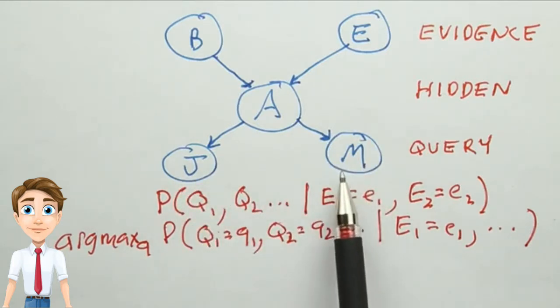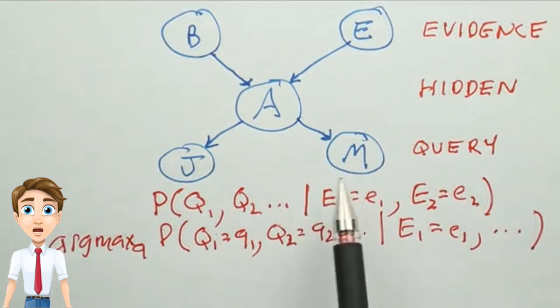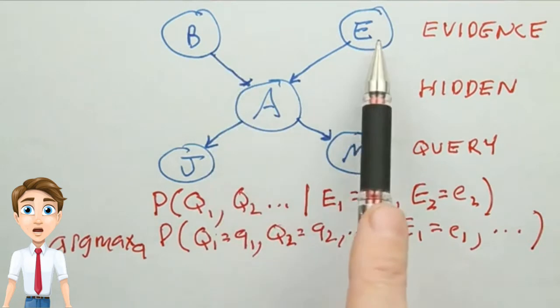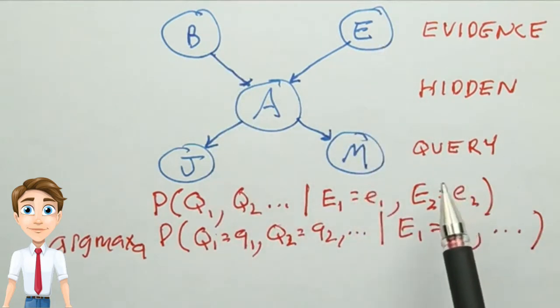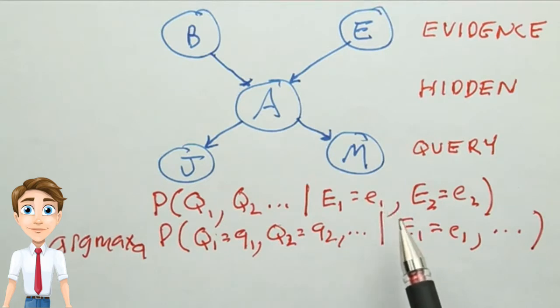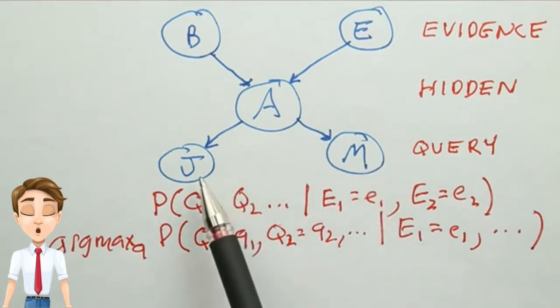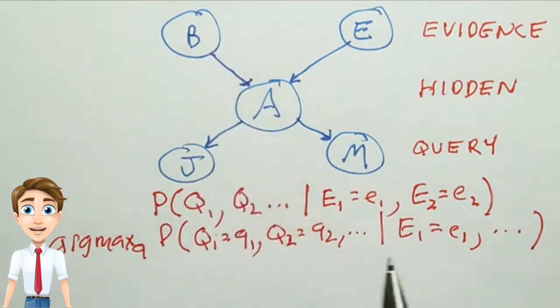Or we could reverse that causal flow. For example, we could have J and M be the evidence variables, and B and E be the query variables. Or we could have any other combination. For example, we could have M be the evidence variable and J and B be the query variables.